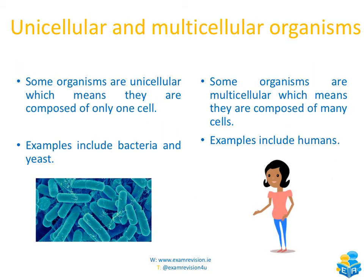When we talk about organisms, which are living things, we can describe them as being unicellular or multicellular. Unicellular — the word 'uni' means one — means they're composed of only one cell. Examples include bacteria and yeast. Multicellular means they're composed of many cells. Examples of this would include us as humans, because we actually contain millions of cells.